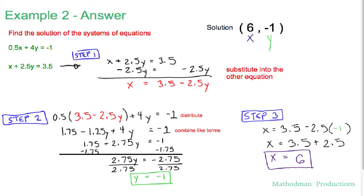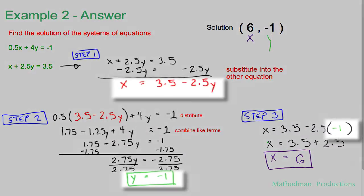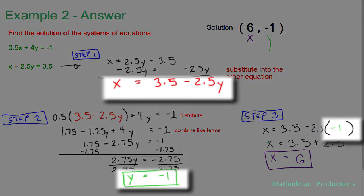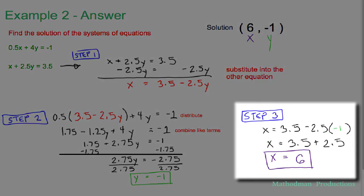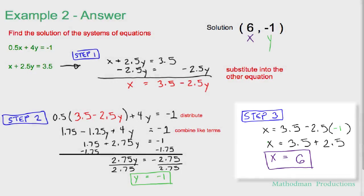And finally in step 3, now that you have the value for y, just go back to that first equation you started off with. And I would even take the one where you already solved for x. Plug that value in and you get x equals 6 after you simplify and solve for it.